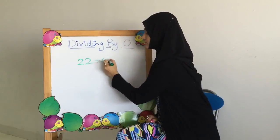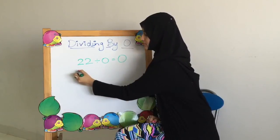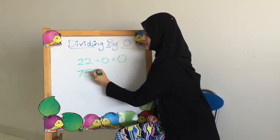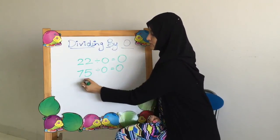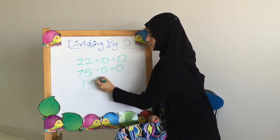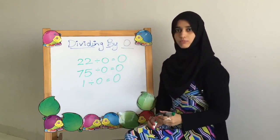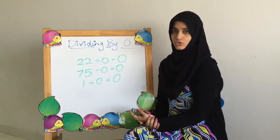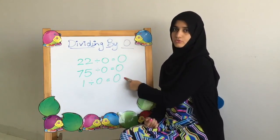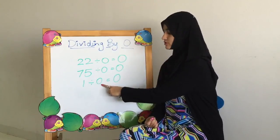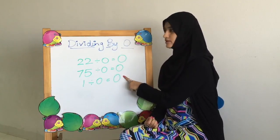22 divided by 0 is going to be 0. For example, 75 divided by 0 — the answer is going to be 0. 1 divided by 0 — again the answer is going to be 0. Whatever number we take, if it is divided by 0, if the divisor is 0, the answer is also going to be 0. There are going to be 0 sets that we make and the set size is also going to be 0.